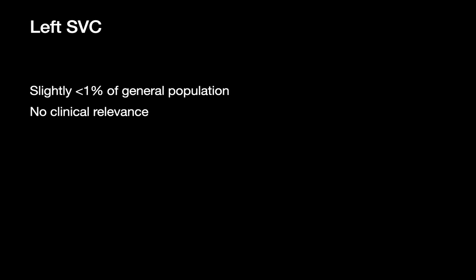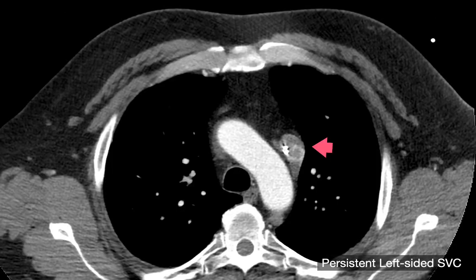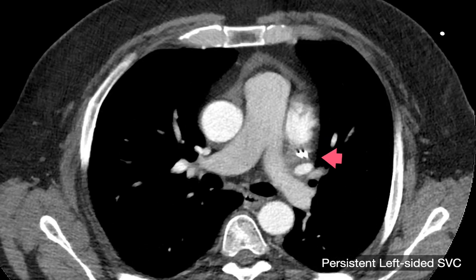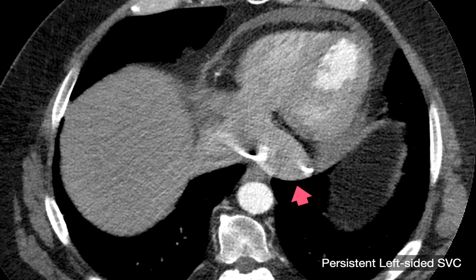A small portion of the population has a non-duplicated left-sided SVC. On chest x-ray alone you cannot necessarily exclude a duplicated SVC, but CTs are diagnostic — you'll see no SVC on the right side, and the left-sided SVC will be larger than in a duplicated SVC patient, since all blood is returning from the upper body via this left-sided pathway. The coronary sinus is also noticeably larger compared to the duplicated SVC example.